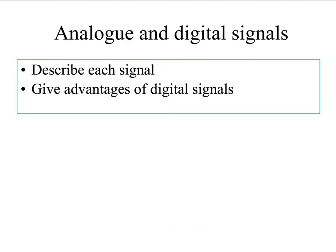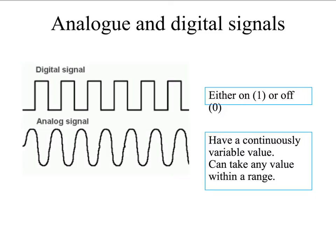On to analogue and digital signals. We're going to look at how we can describe each signal, and talk about the advantages of digital signals. A digital signal can only take two values — it can either be on or off, which we can also express as a 1 or a 0. Examples of a digital signal are Morse code, and optical fibres also use flashes of light or infrared. The light can either be on or off, which is why it's a digital signal.